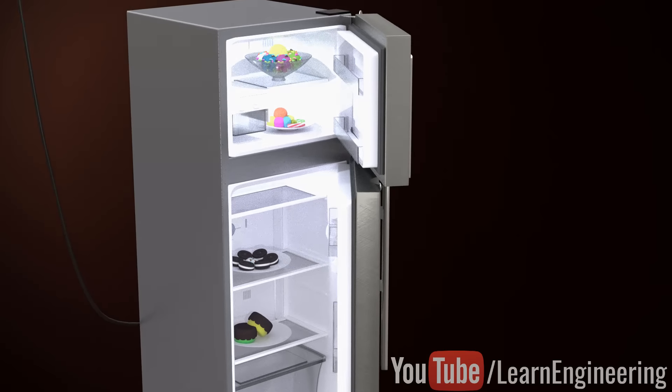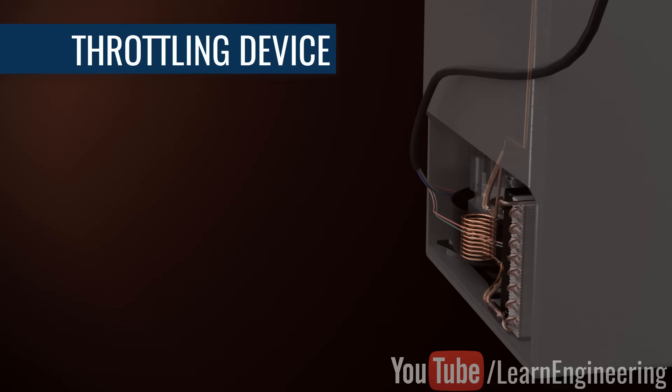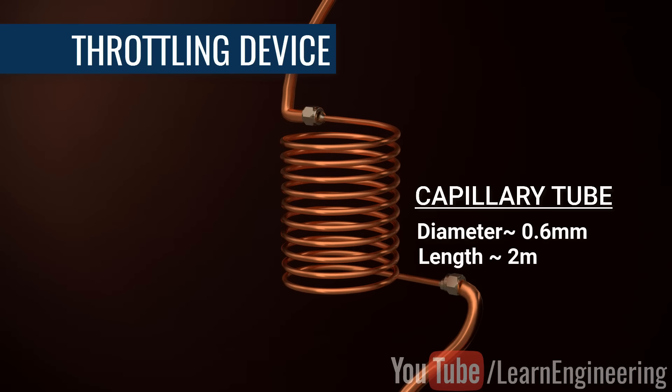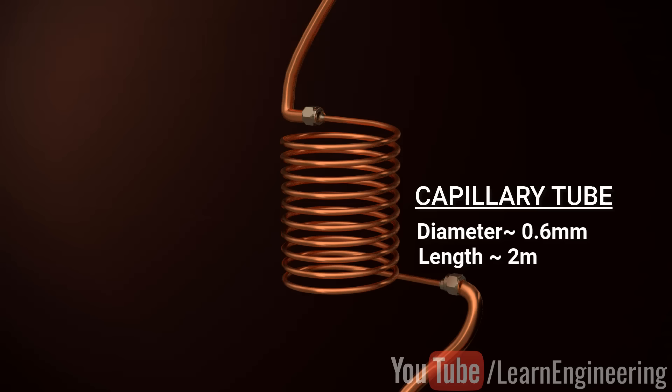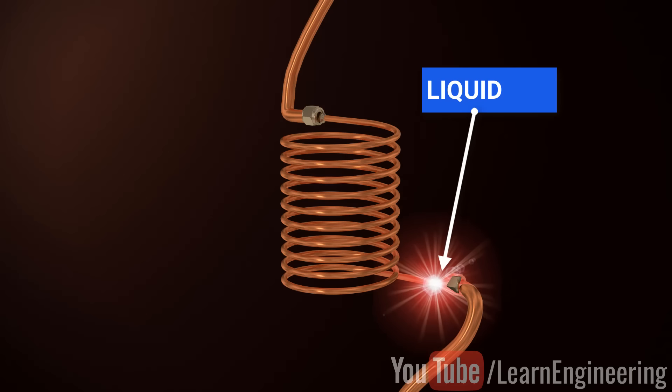A simple device called a throttling device is the most crucial component of refrigerators. Here, a capillary tube is used as throttling device. A cold liquid is produced using the throttling phenomenon. For effective throttling at the inlet, the refrigerant should be at a liquid state under high pressure.